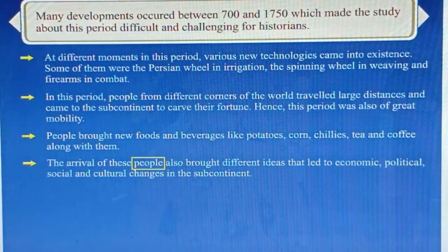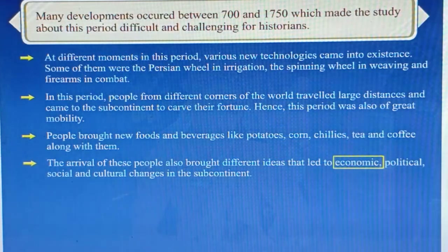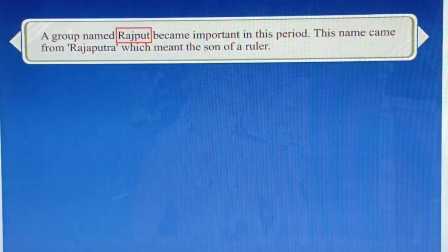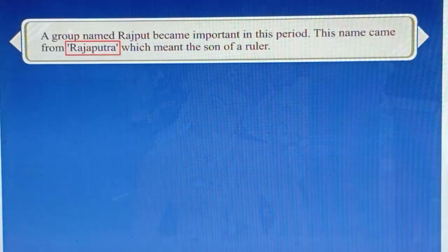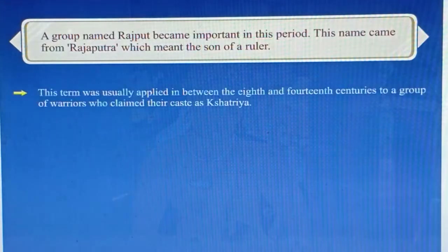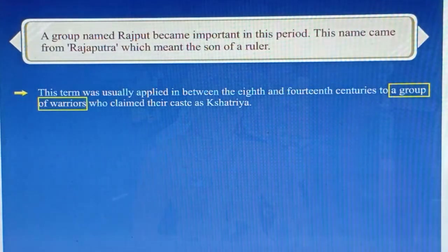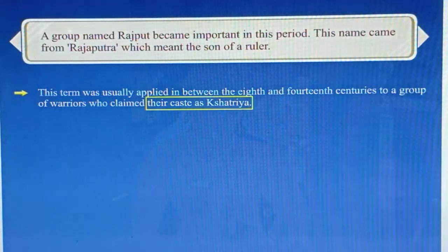The arrival of these people also brought different ideas that led to economic, political, social and cultural changes in the subcontinent. A group named Rajput became important in this period. This name came from Rajaputra, which meant the son of a ruler. This term was usually applied between the 8th and 14th centuries to a group of warriors who claimed their caste as Kshatriya.